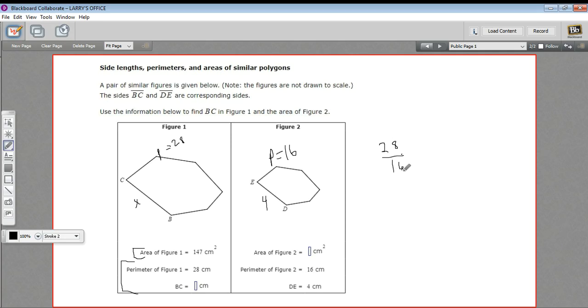So that's a perimeter of 28. And the smaller polygon on the bottom, perimeter of 16. Let's simplify this. Both of those are divisible by 4. So 7 fourths. This polygon is 7 fourths. All the sides are 7 fourths bigger than this one.